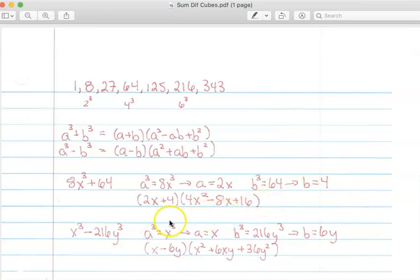Okay, let's try an example with the difference of cubes. So here we have x cubed minus 216y cubed.